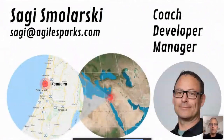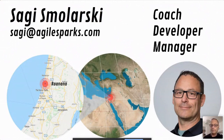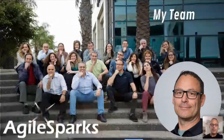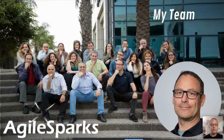Just a few words about myself. I'm Sagi Smolarski, located in Ra'anana, which is essentially in the outskirts of Tel Aviv in Israel. I'm currently a coach, a developer, and a manager, and I've been a developer and manager for about 25 years. I'm part of the Agile Sparks team — a boutique consulting firm dealing with organizational improvement, particularly for companies developing software products or software and hardware combination products.